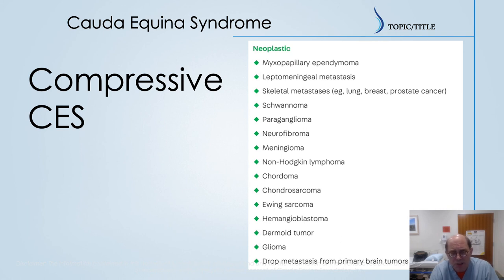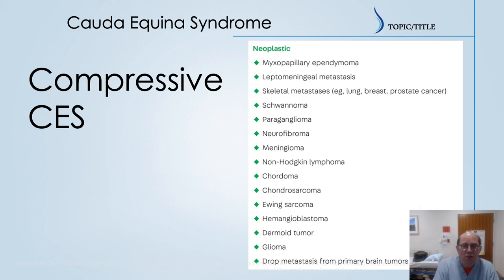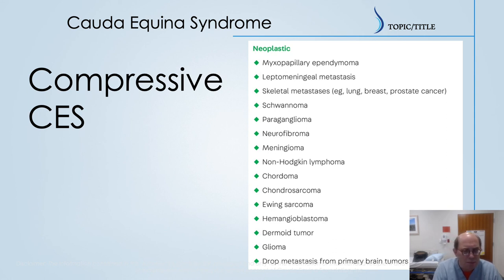The last compressive group includes different types of tumors — all going to be visible on scans. We'll be able to see the tumor, whether it's metastatic, lymphoma, sarcoma, or neurofibroma, producing compression on the cauda equina. These are not disc- or trauma-related, but are other scan-positive causes.